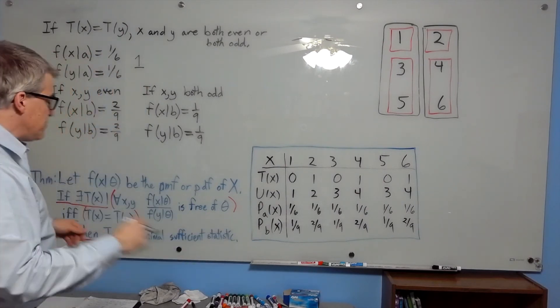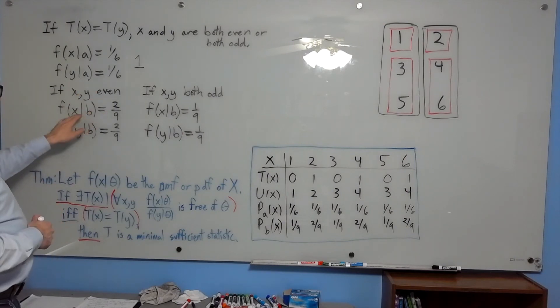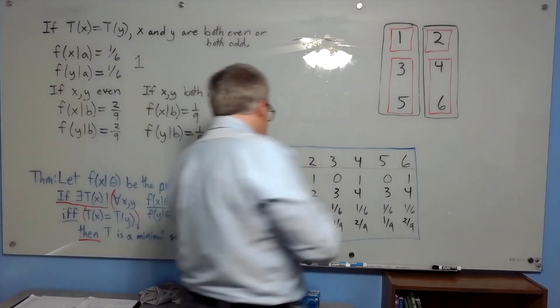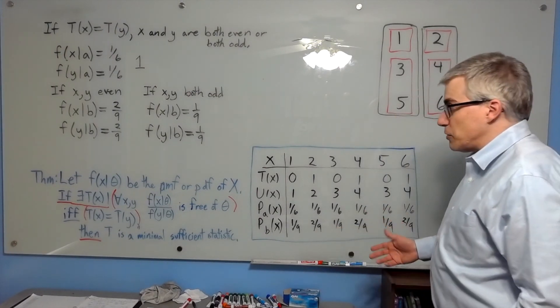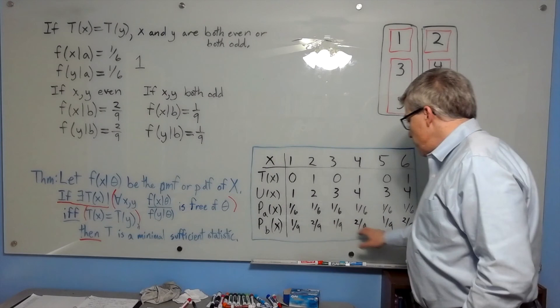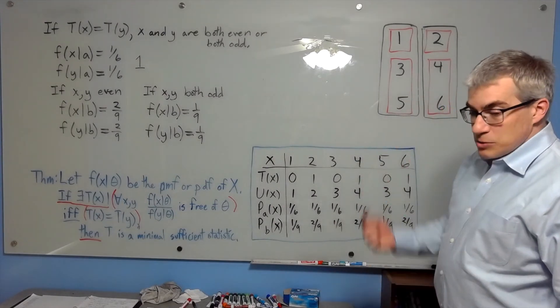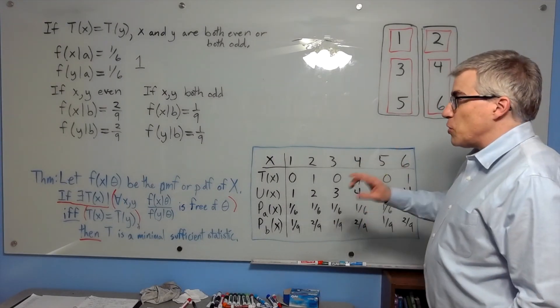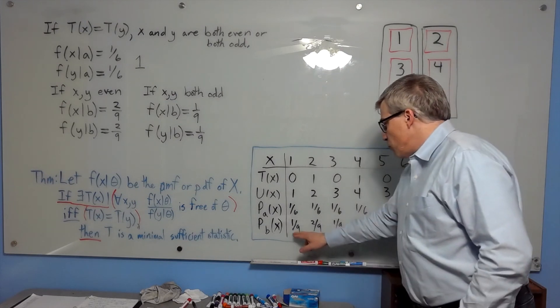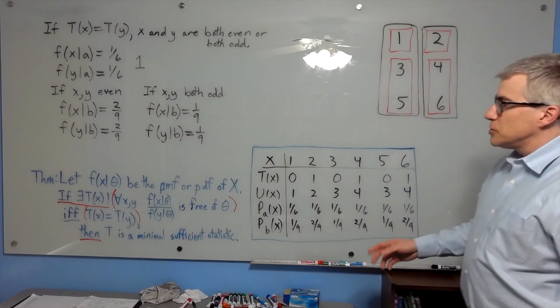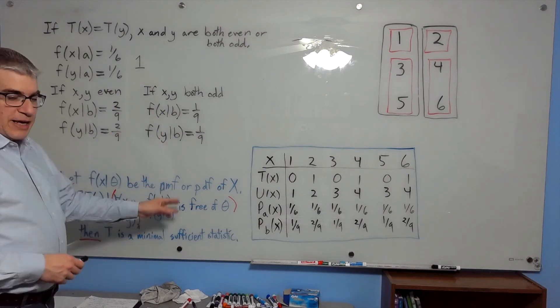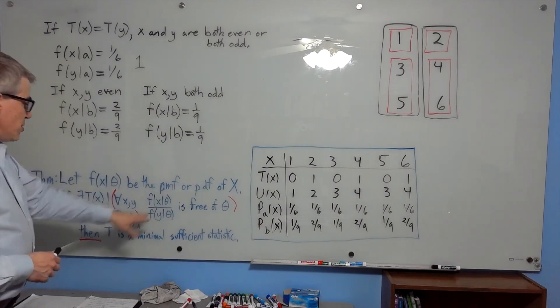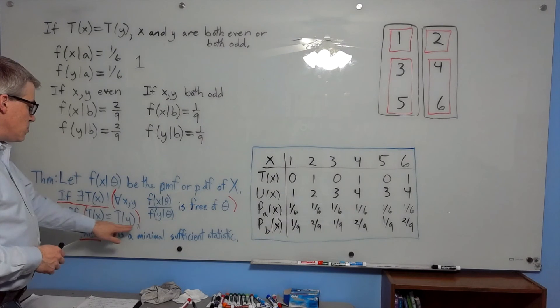That's the only value. And same for y, two-ninths. So two-ninths over two-ninths is 1. If x and y are both odd, then we have one-ninth over one-ninth. In every case, we get 1, which is in fact free of theta. That's covered all the possibilities if t of x equals t of y.